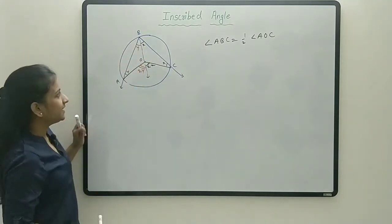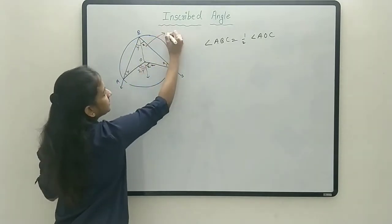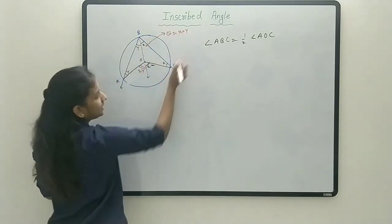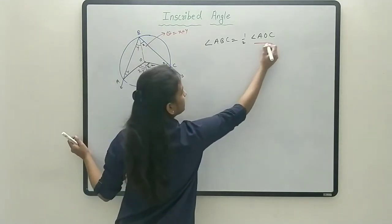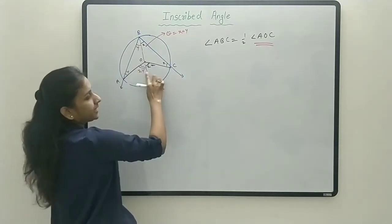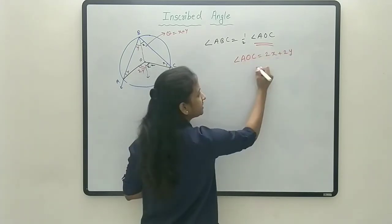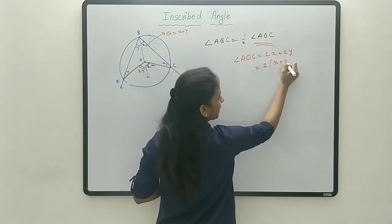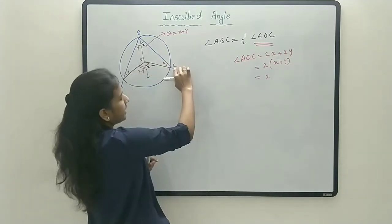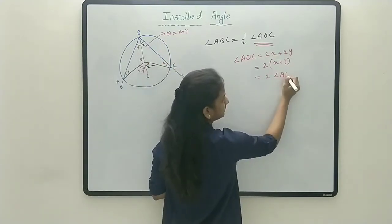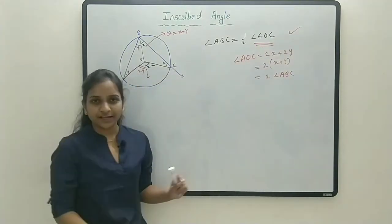Similarly, in triangle AOB, OB and OA are both radii, so it is also an isosceles triangle. If this angle is Y, then this angle is also Y. The exterior angle at O for triangle AOB is 2Y. If we say angle ABC is theta, then theta equals X plus Y, and angle AOC equals 2X plus 2Y, which is twice of angle ABC. So we have proved that angle ABC is half of angle AOC.